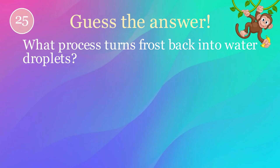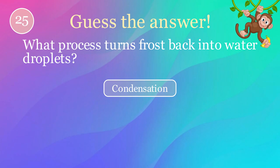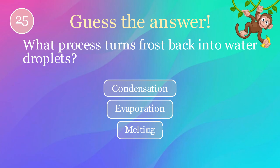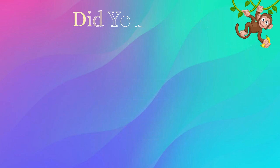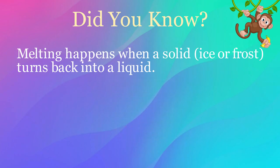What process turns frost back into water droplets? Options: condensation, evaporation, melting. The correct answer is melting. Here's an interesting fact: melting happens when a solid — ice or frost — turns back into a liquid.